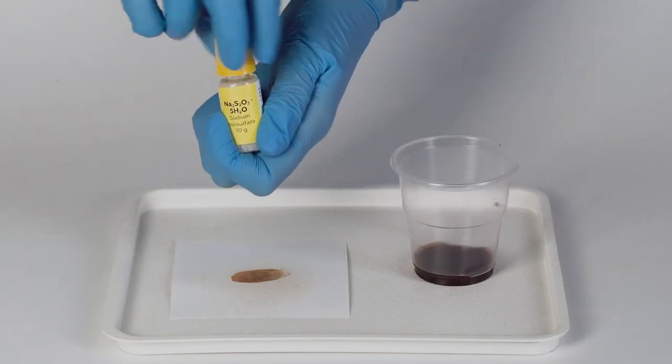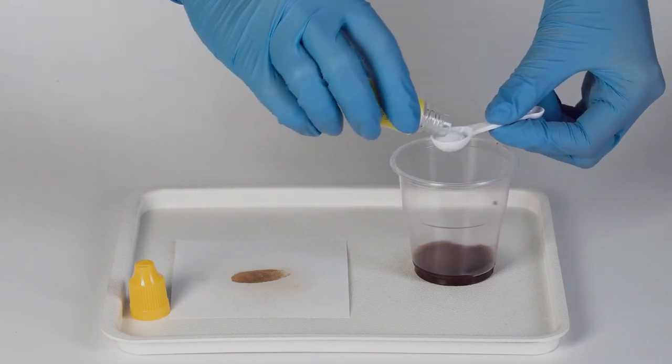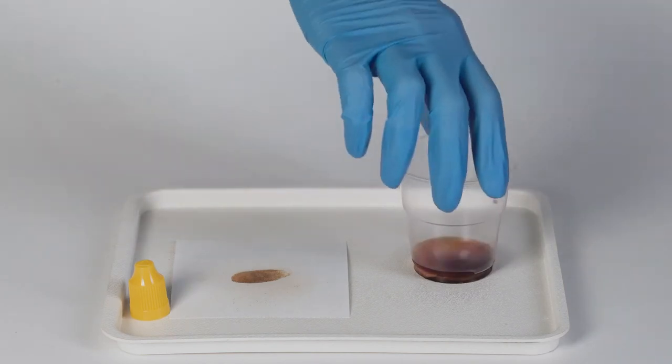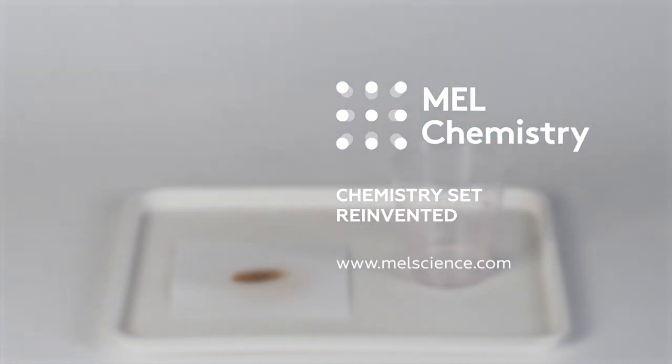Neutralize the rest of the iodine with the help of two big measuring spoons of sodium thiosulfate. Pour the solution down the sink and wash away with an excess of water. Learn more about this experiment on our Mel Science website.